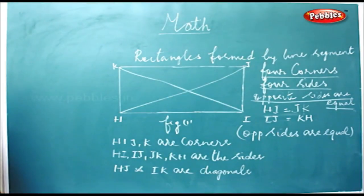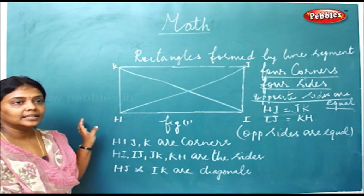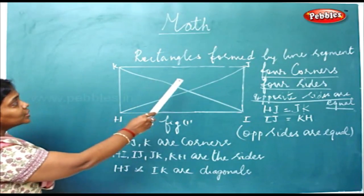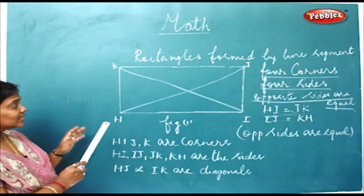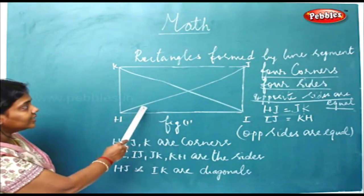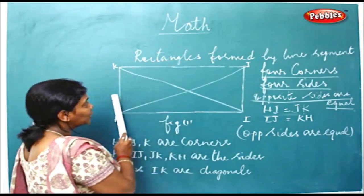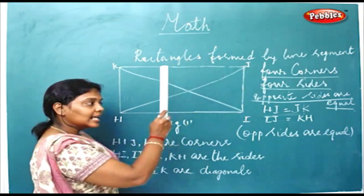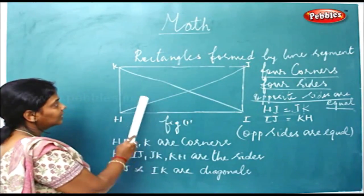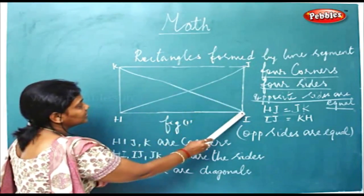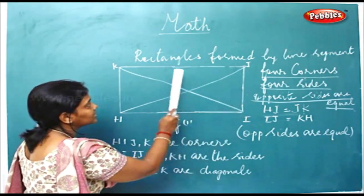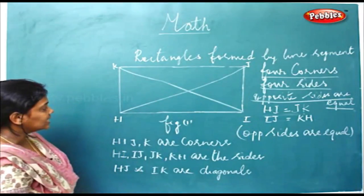Rectangle. Earlier we saw a square. Now we are going to see a rectangle which is formed by using a line segment. As you can see, there is a lot of difference between a square and a rectangle. In a rectangle, you have 4 corners and 4 sides like a square, but the opposite sides are equal here. You can see the opposite sides are equal — these 2 are the opposite sides and these 2 are the opposite sides.